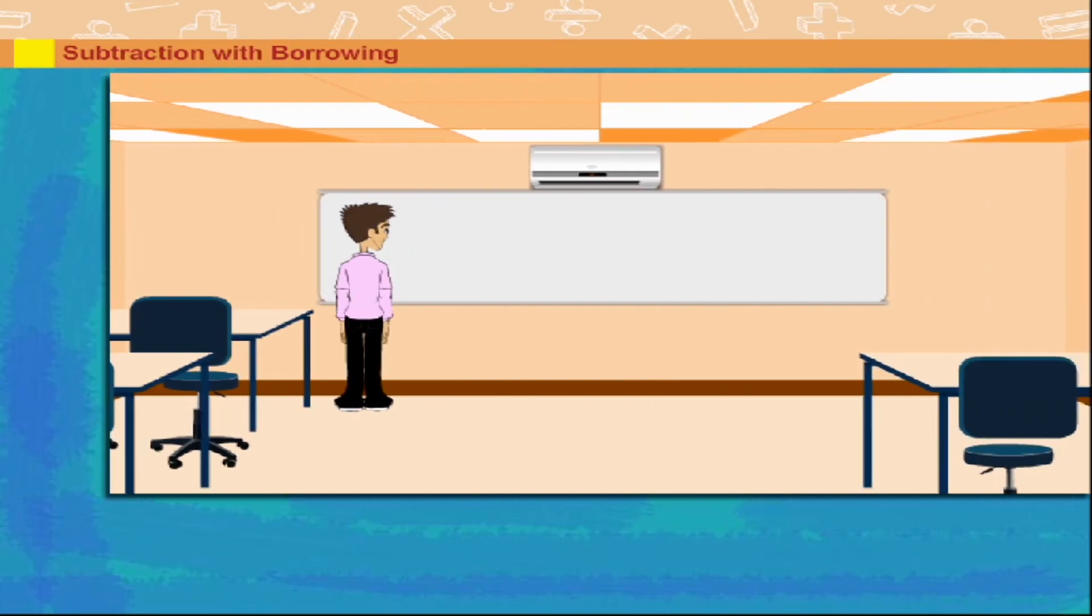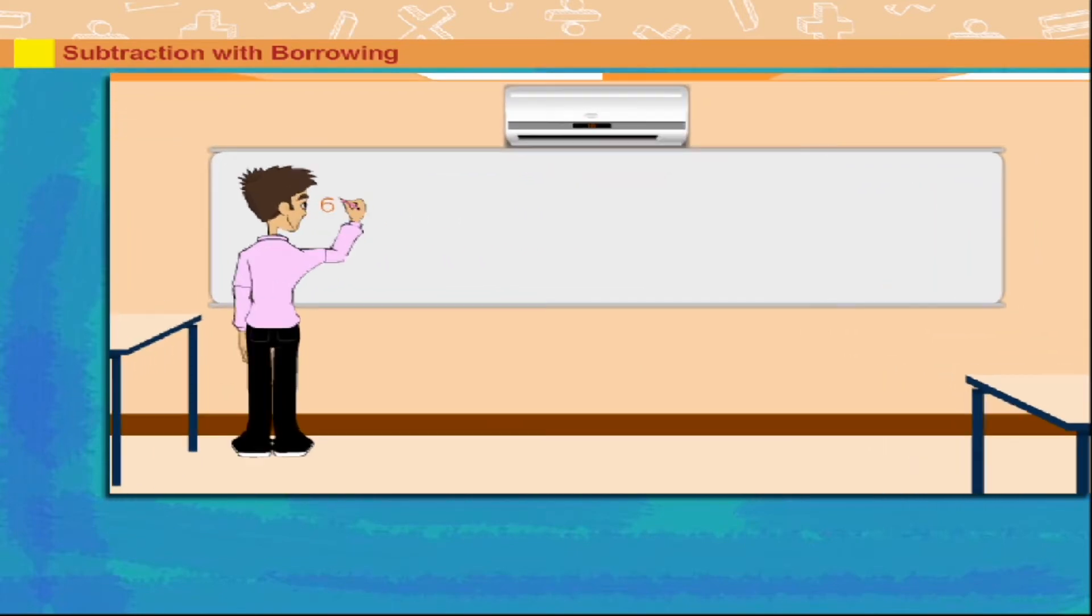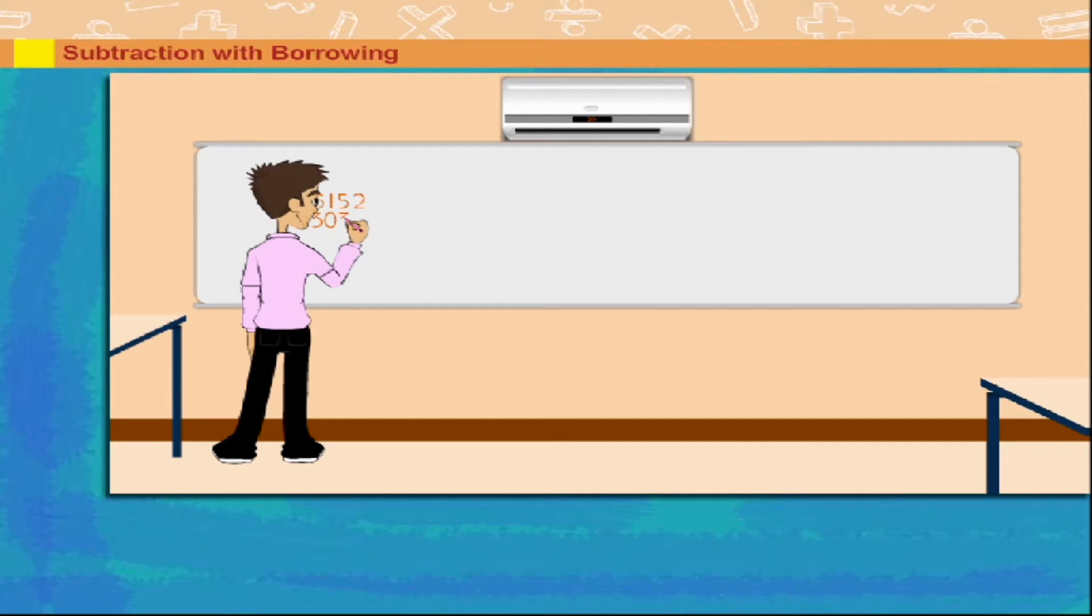Subtraction with borrowing. Billy is subtracting 3,037 from 6,152. He subtracts the ones.